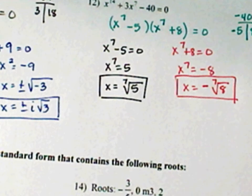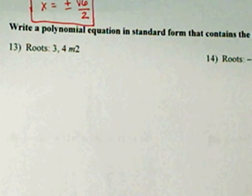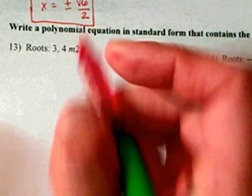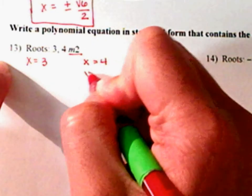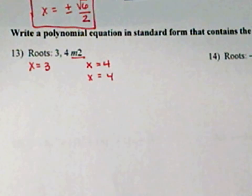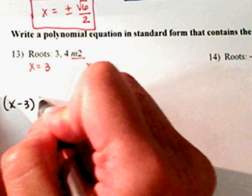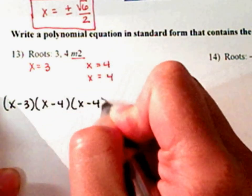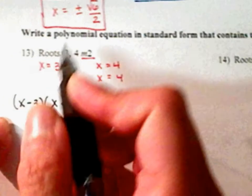Number 13 says: write a polynomial equation in standard form that contains the following roots. Here are your roots — x equals 3, and x equals 4 with a multiplicity of 2, meaning you have 2 of them. Standard form goes from highest degree to lowest degree. So this would be x minus 3, and x minus 4 squared — two of them. I'm actually going to do the two (x minus 4) factors first and come back to the other one.